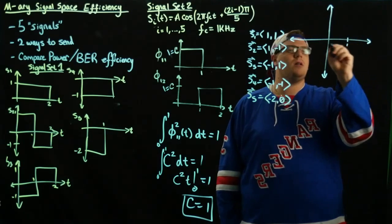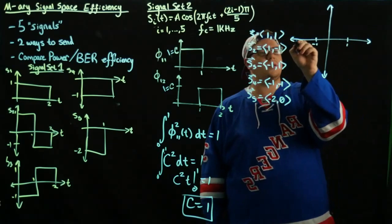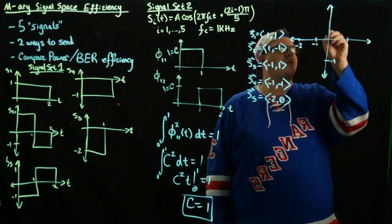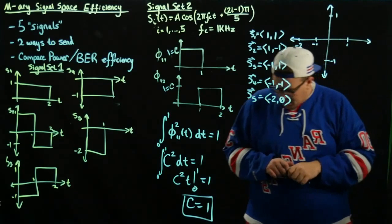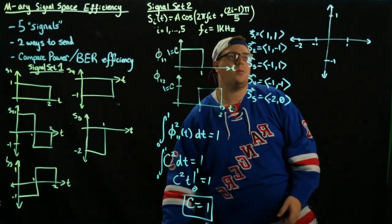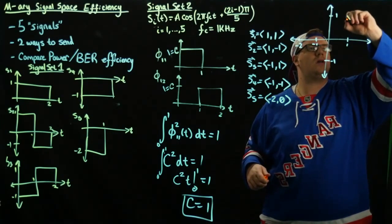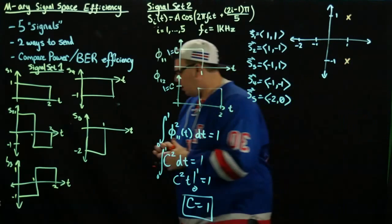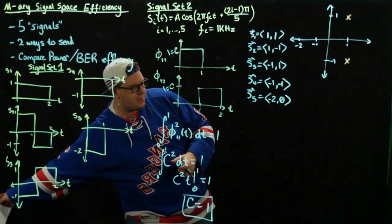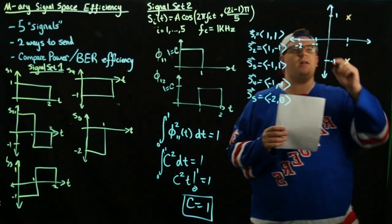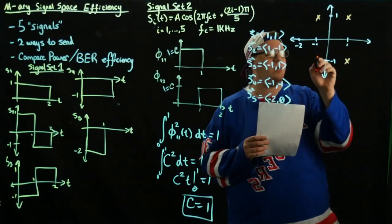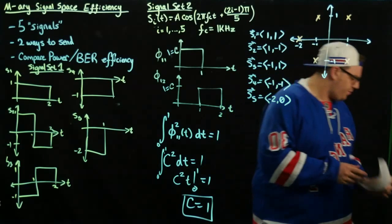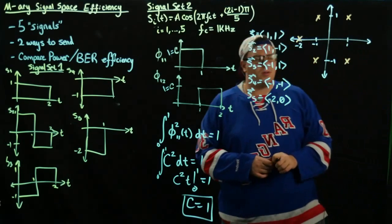If this is 1, this being negative 1, sorry for the bad spacing, negative 2, we have negative 1 and we have 1. Plotting these into signal space: we have (1,1), we have (1,-1), we have (-1,1), we have (-1,-1), and then we have (-2,0). So those are all of our signals.